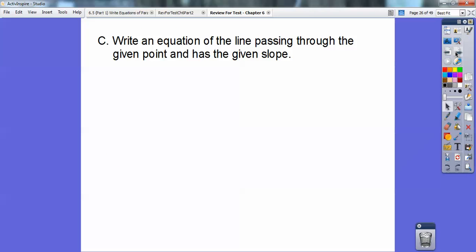Write an equation of the line that passes through the given point and has the given slope. Here, this is a little bit easier. They give you the slope. So y equals 2x plus b. Plug in that known point, and you get 6 right there. You subtract, you get 2. y equals 2x plus 2.